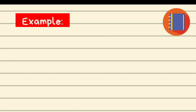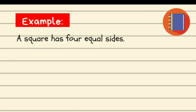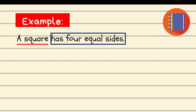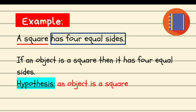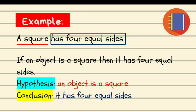Let's have another example. The statement is: a square has four equal sides. The subject is about a square having four equal sides. If we rewrite it as an if-then statement, that will be: if an object is a square, then it has four equal sides. The hypothesis is 'an object is a square,' and the conclusion is 'it has four equal sides.'